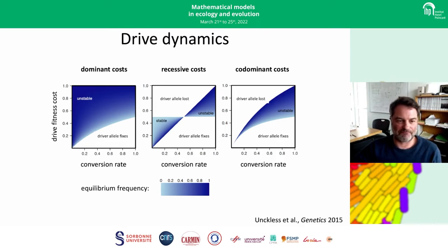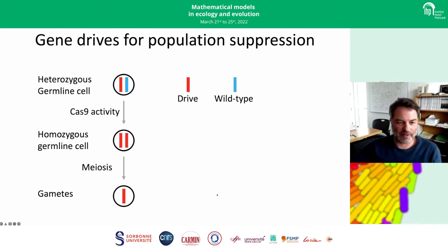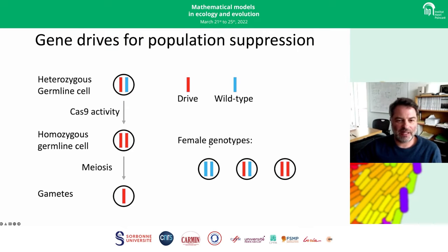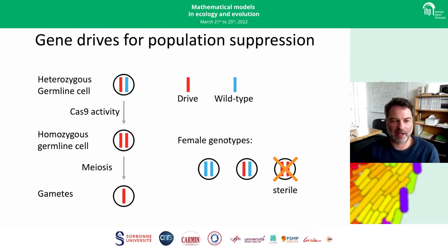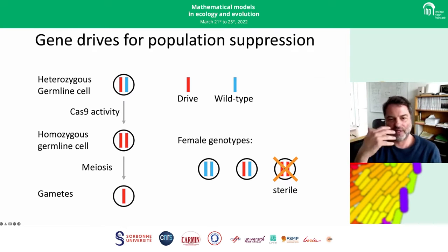The key point is that if the conversion rate is high enough and the fitness cost not too high, the drive is always expected to spread through and fix in the population in just maybe 15 or 20 generations. One consequence is that this drive mechanism is so strong that you can push something through the population that is ultimately not good for the population. You can look at a scenario where you drive an allele that causes sterility in females when homozygous — for example by targeting a haploinsufficient gene.